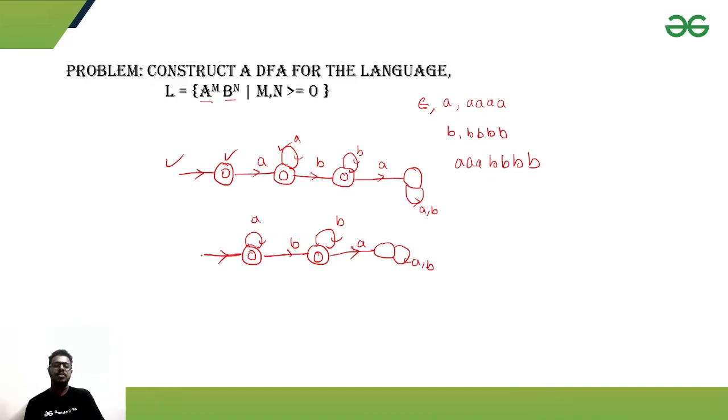So, these both are correct options. These both are correct constructions of DFAs. Only the difference is that it is having three states and this DFA is having four states. This is the minimum one.